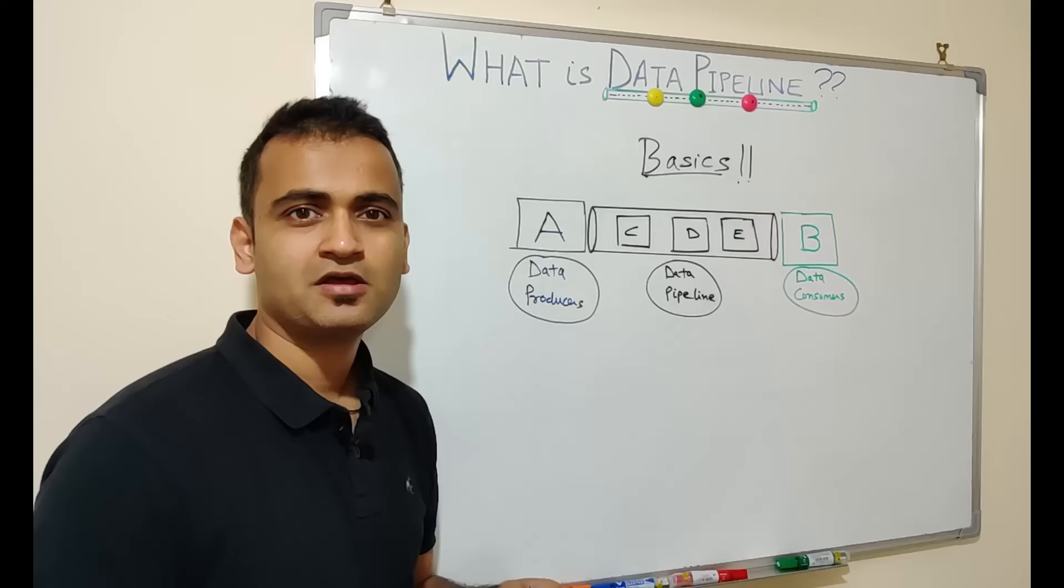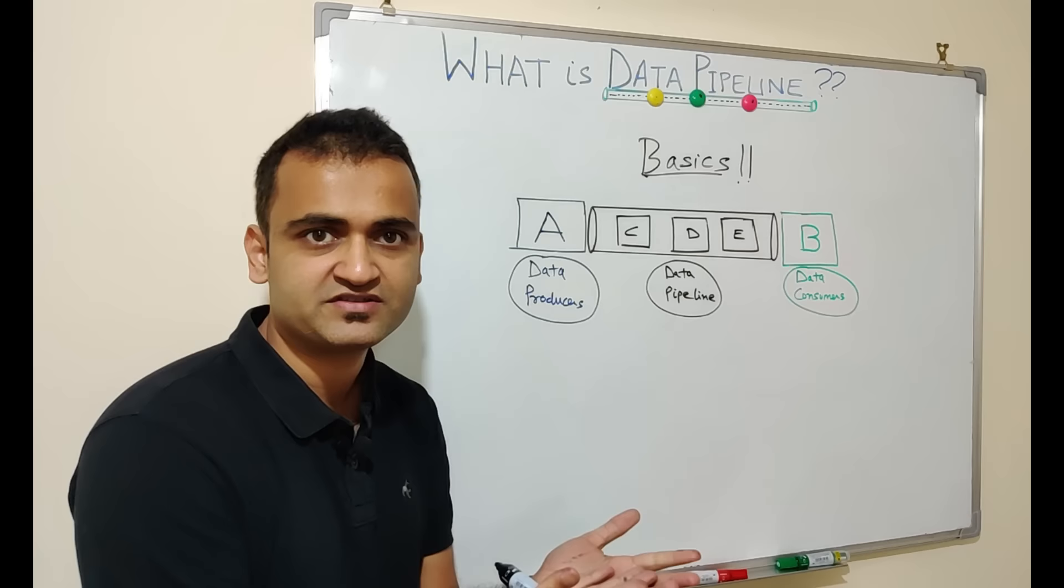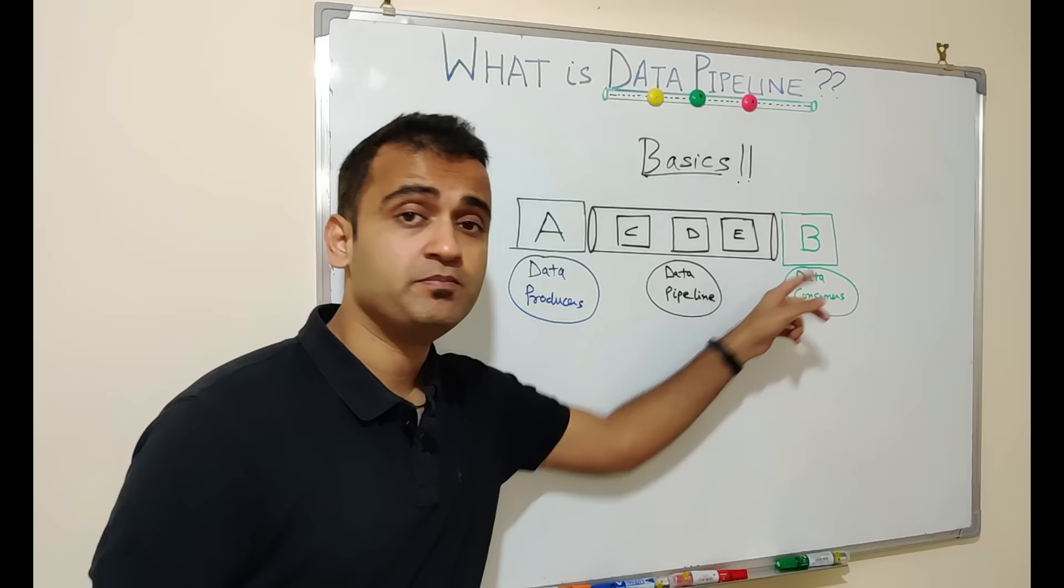Friends, basically a data pipeline is no different from our traditional water pipeline which we just discussed. It is a mechanism to transfer data from point A to point B through some intermediary steps like point C, D, and E.